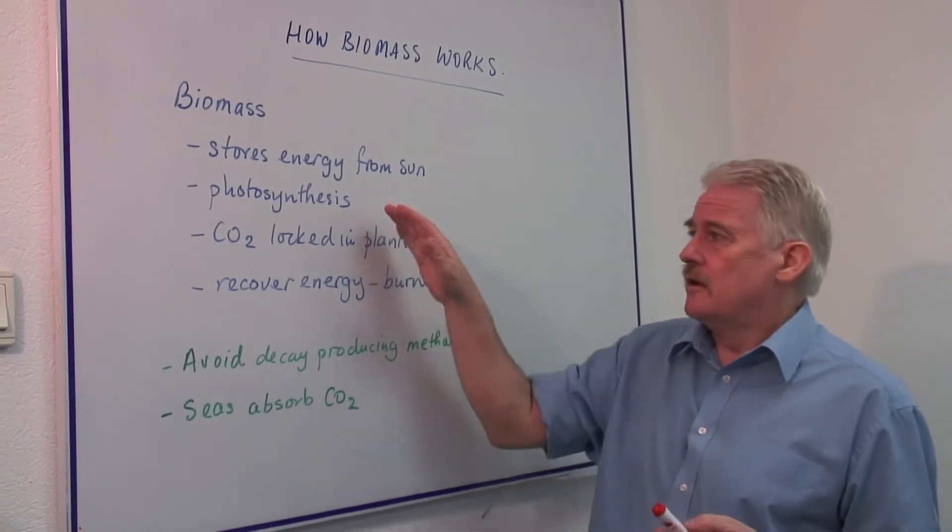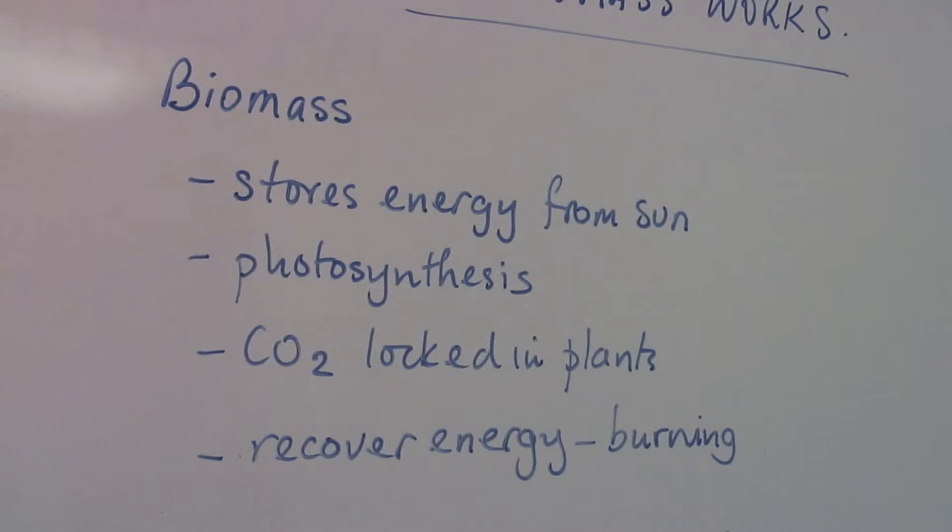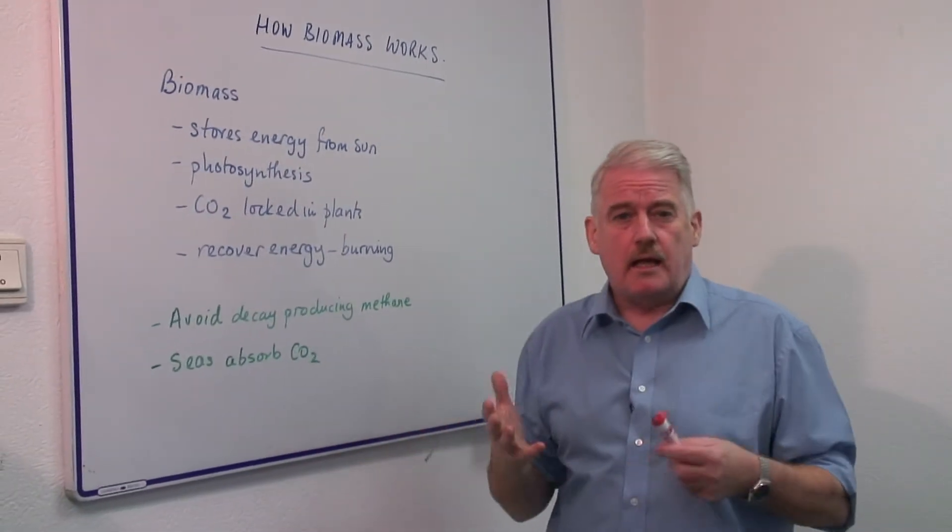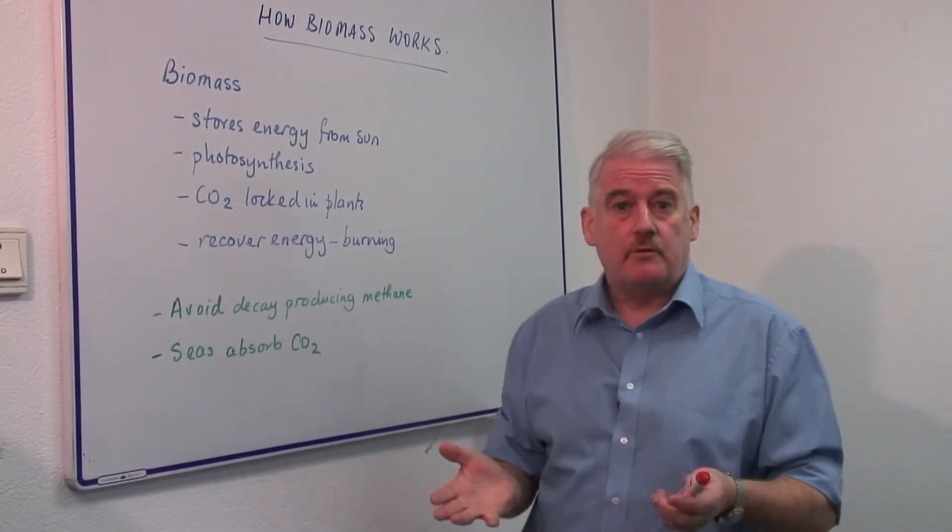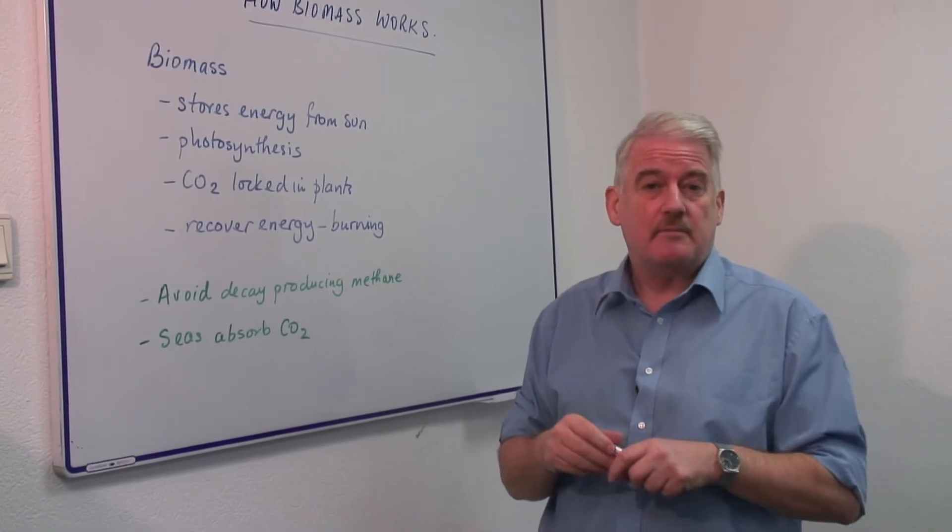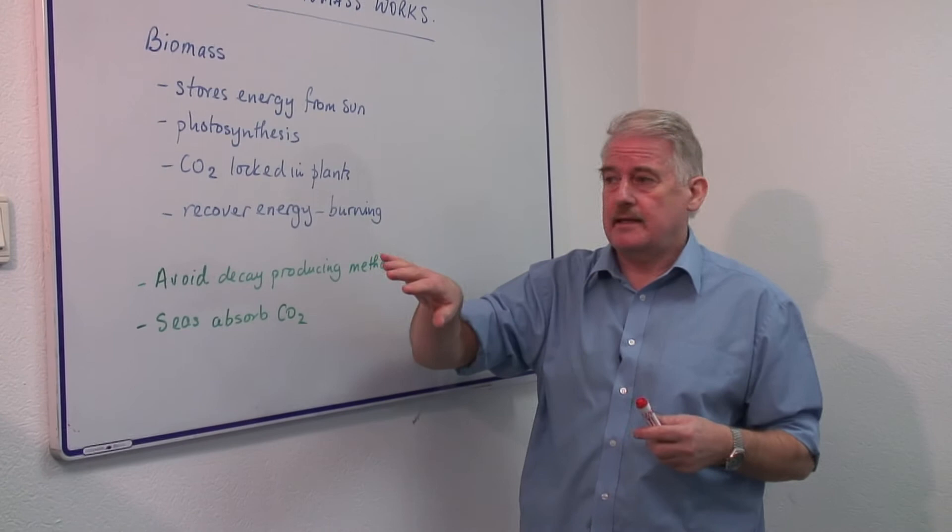Biomass, that is living matter, using the process of photosynthesis, locks CO2 up in the plants and prevents it coating the atmosphere with a layer of CO2 and making the atmosphere too warm. It is that that keeps our planet as it is.